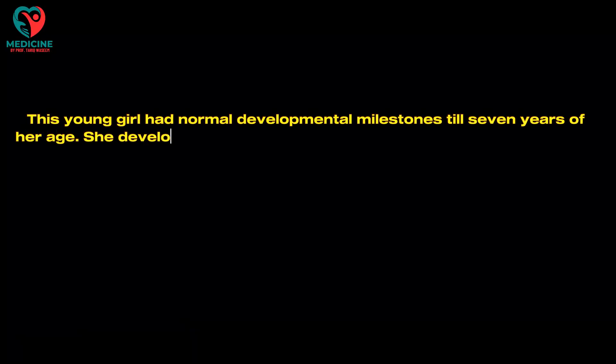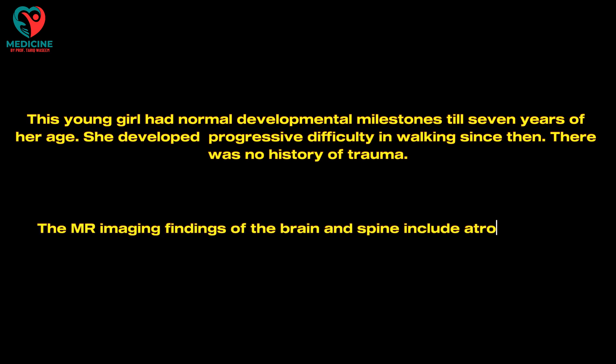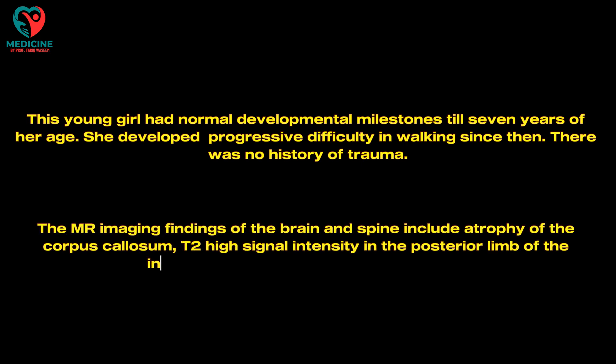This young girl had normal developmental milestones till 7 years of age. She developed progressive difficulty in walking since then, with no history of trauma. MRI findings of the brain and spine include atrophy of the corpus callosum, T2 high signal intensity in the posterior limb of the internal capsule, and spinal cord atrophy.